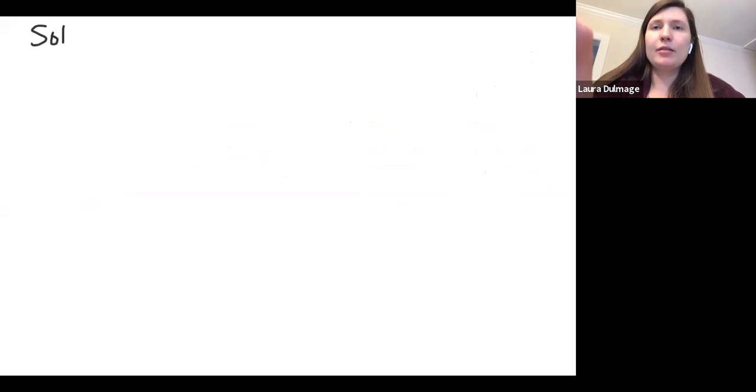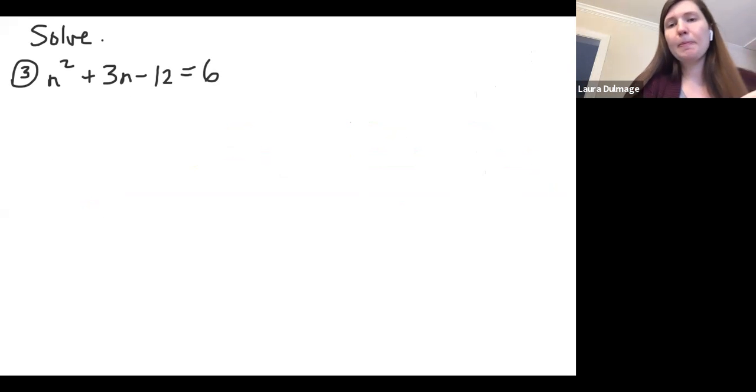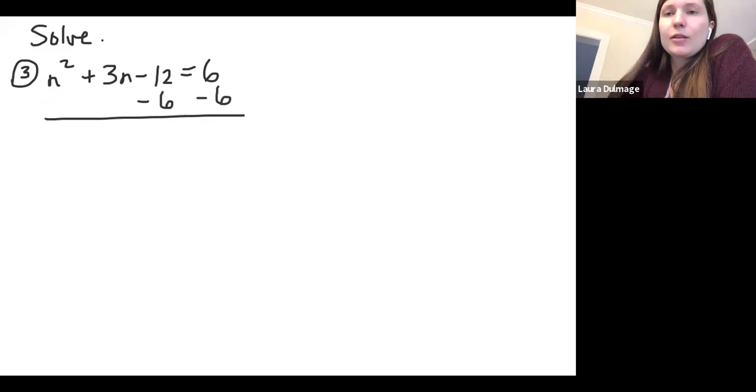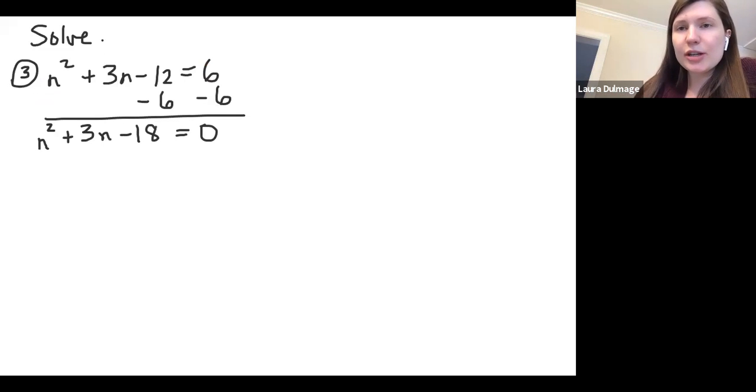Okay, so same thing. Number 3: n² + 3n - 12 = 6. So for this one, we're not already equal to zero. So we need to get equal to zero in order to solve. In order to do that, you want to keep the squared term positive as best you can. So we don't want to mess with the left-hand side. Instead, we'll mess with the right-hand side and subtract 6. When we do that, that's setting our quadratic to zero. So we'll have n² + 3n - 18 = 0. This is factorable. So I want you guys to go ahead and factor this.